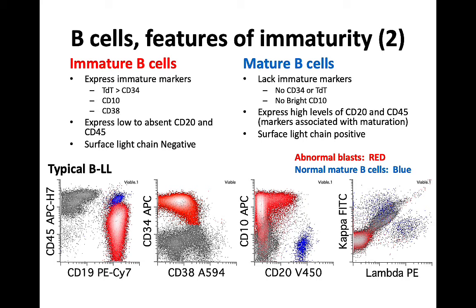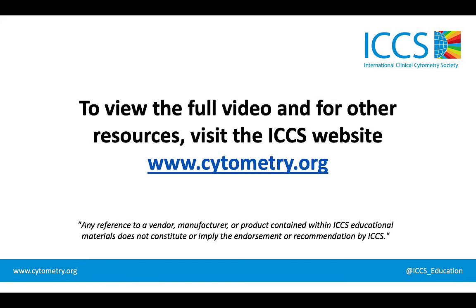Looking at kappa versus lambda, our abnormal B-lymphoid blasts are negative for both kappa and lambda, but the normal background mature B-cells in blue show polytypic expression of these two light chains. CD38 can be increased in an immature B-cell population, but here the level of CD38 is relatively low — that decreased CD38 expression really distinguishes this abnormal blast population from a normal B-cell precursor. That's part of our secondary steps, and we'll talk more about those tools in video two.